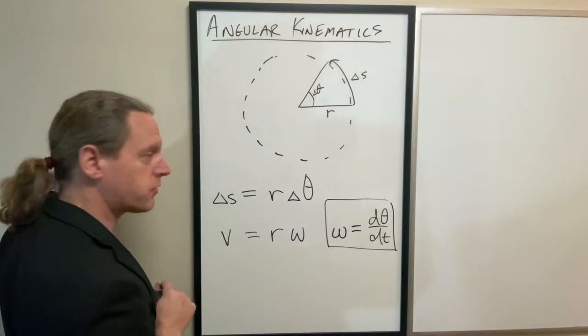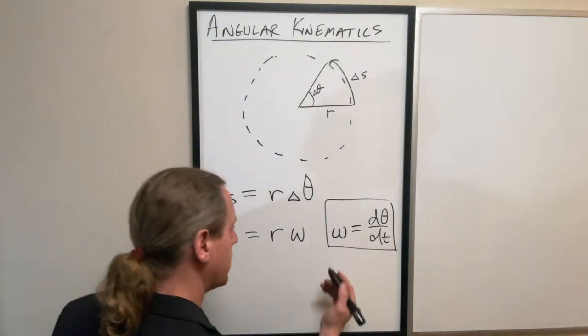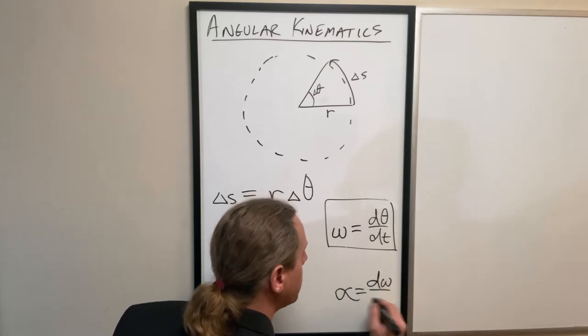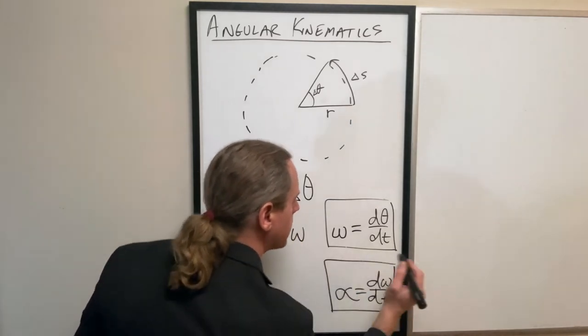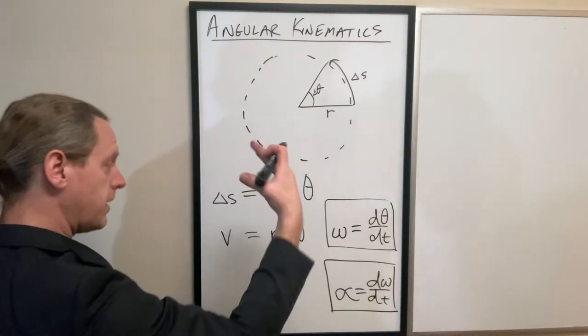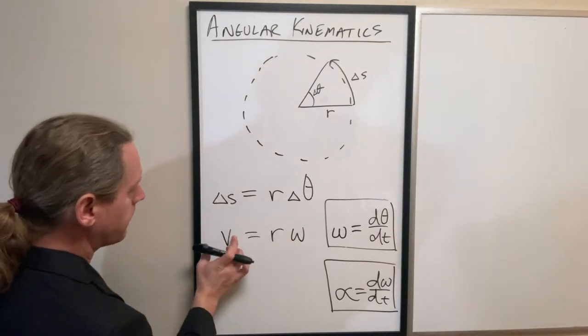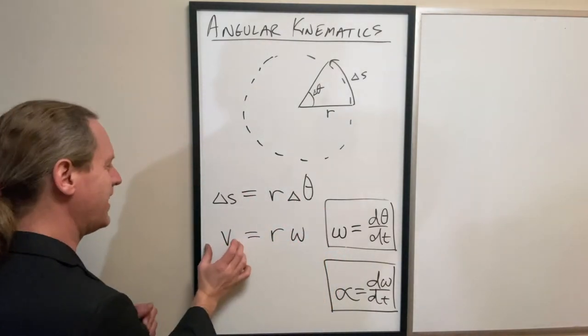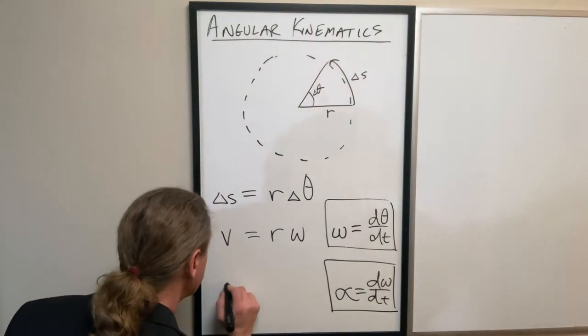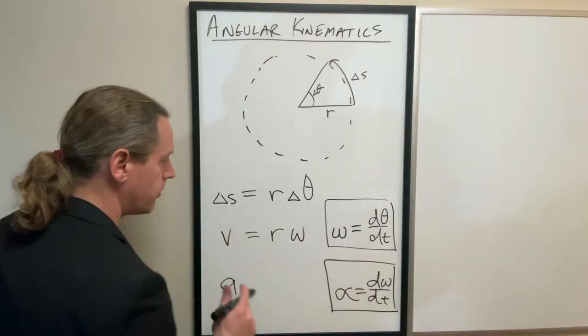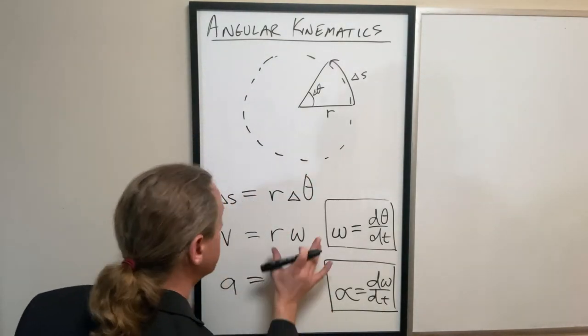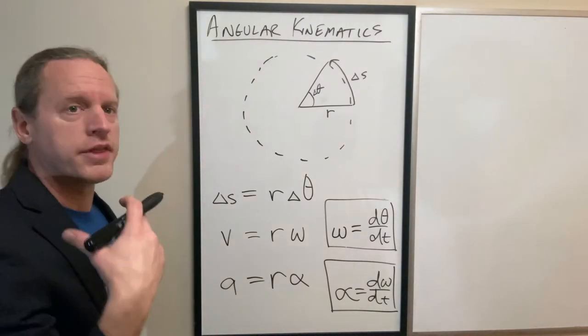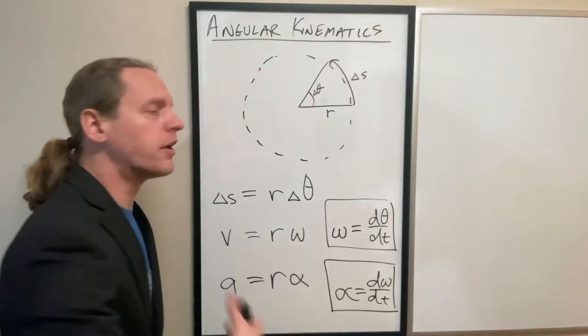If we similarly define our angular acceleration alpha to be our change in angular velocity with time, d omega dt, we take the time derivative of both sides. The left hand side clearly becomes your linear acceleration a, meters per second squared, and on the right hand side the time derivative, if the radius is constant, is simply r alpha. These are the essentially five underlying equations you have to deal with when you work with angular motion.